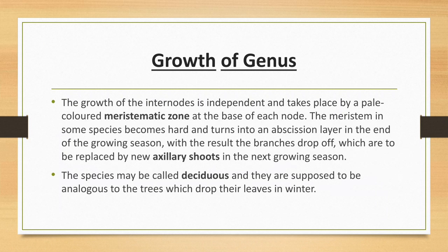Growth of the genus: The growth of internodes is independent and takes place by a pale-colored meristematic zone at the base of each node. The meristem in some species becomes hardened and turns into an abscission layer at the end of the growing season, with the result that branches drop off, to be replaced by new axillary shoots in the next growing season. These species may be called deciduous, and are considered analogous to trees which drop their leaves in winter.